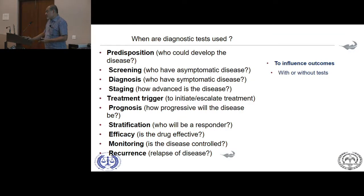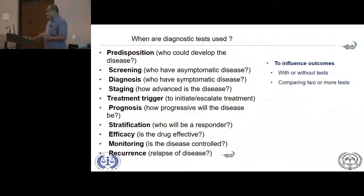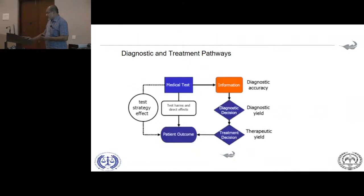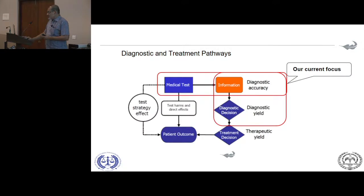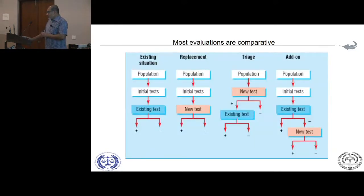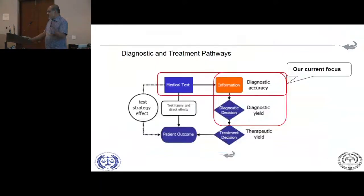If you want to influence outcome, you might ask: if I use the test or don't use the test, will it make a difference? For example, with screening mammography, you can ask how many people are going to have better outcomes. That's a different question requiring a different design. We have been looking essentially at diagnostic accuracy so far.